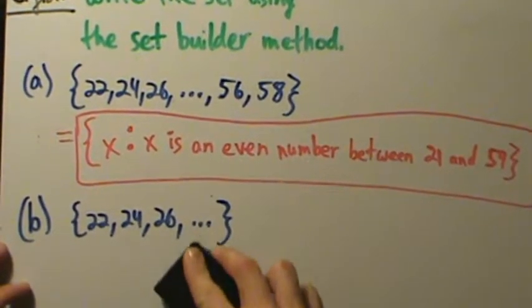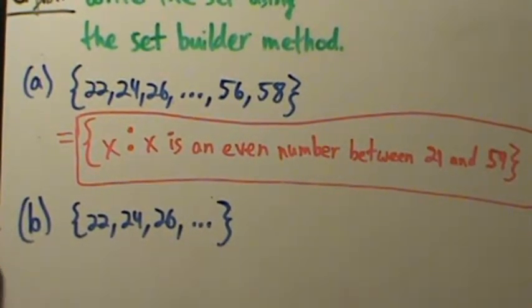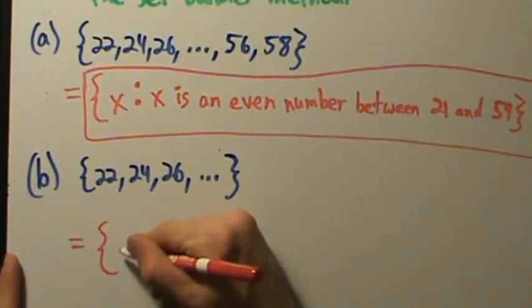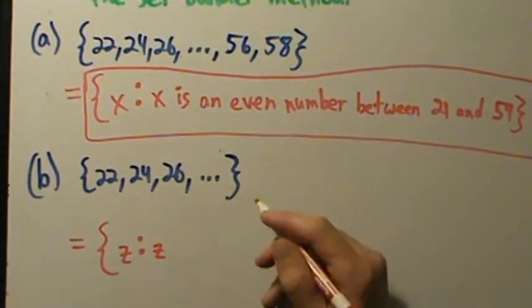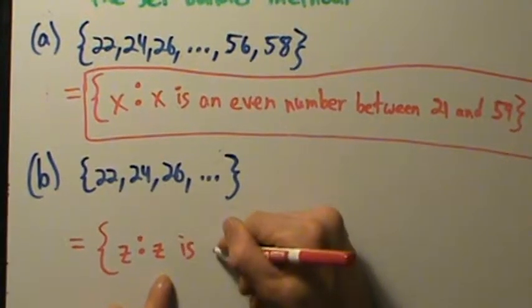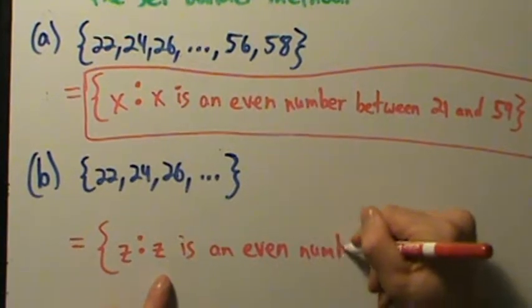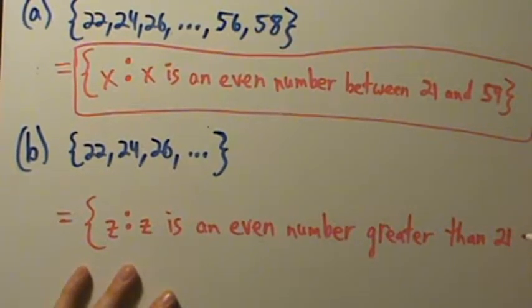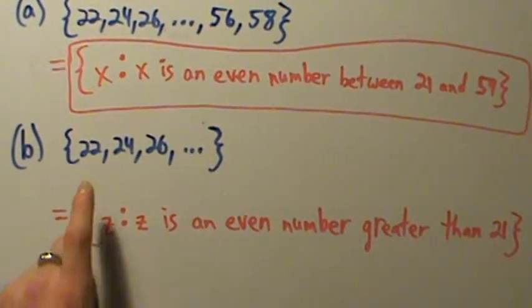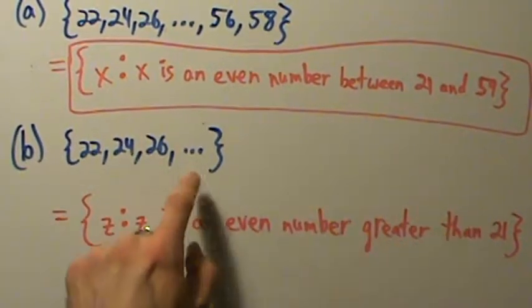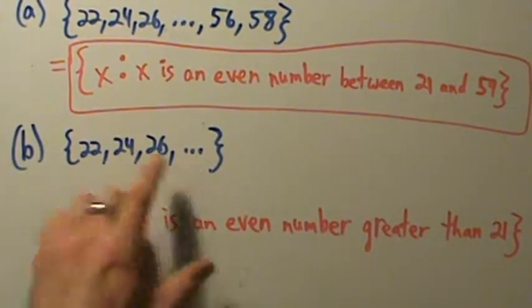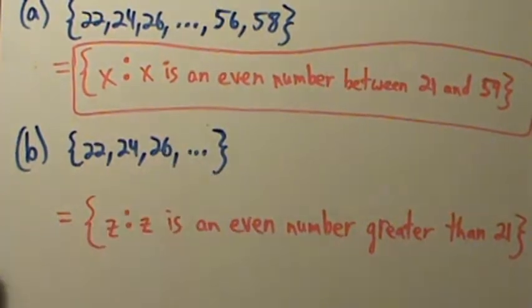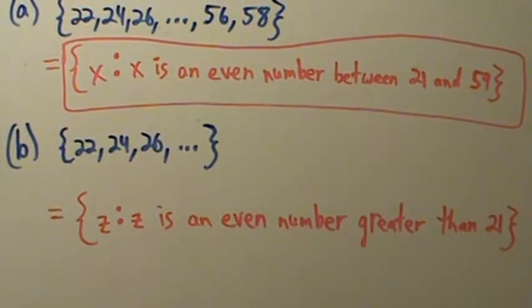So if we want to describe part B in set builder notation, let's use Z just to emphasize that the variable name doesn't matter. Z such that Z is an even number greater than 21. The dots at the end with no stopping point mean continue the pattern forever, so this gives all even numbers greater than 21 — starting with 22, 24, 26, and so on.